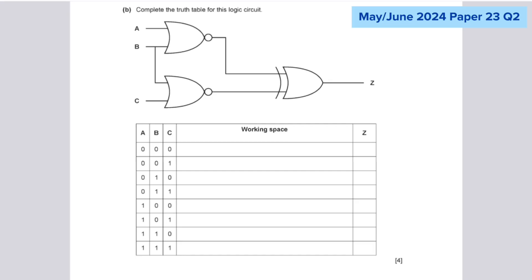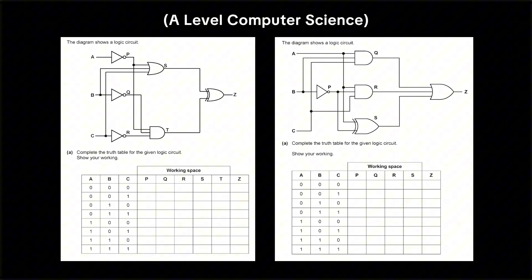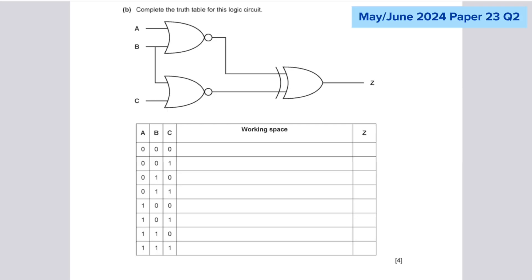And it can get a bit hard if they give you a lot of gates to work with. So here's an alternative method that you can use. Firstly, what you do is that you label each of the gates with your own letters. So for example, this one I'll label with P and this one I'll label with Q. And this one leads to the output Z. So we're just going to call it Z again.